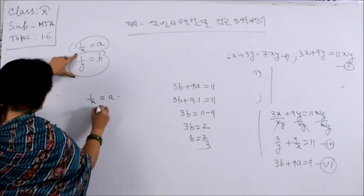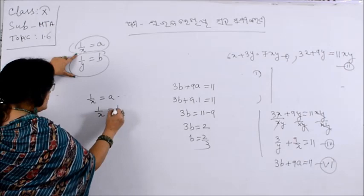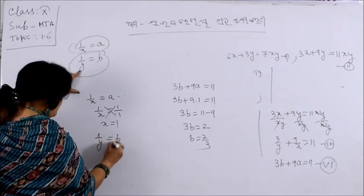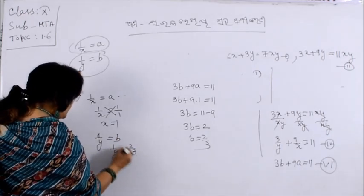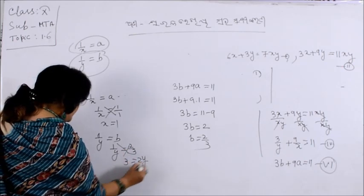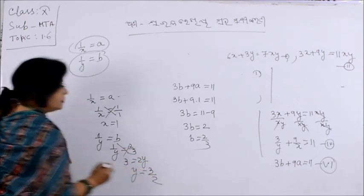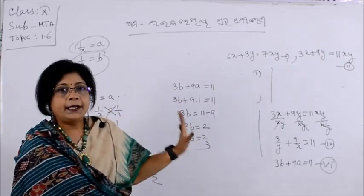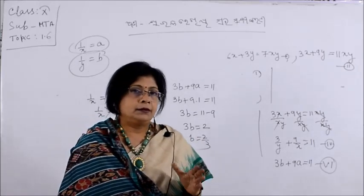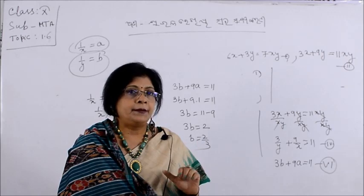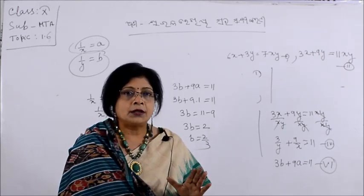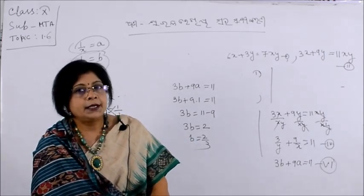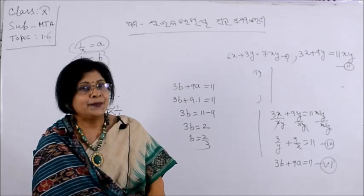1 by x is equal to A, so 1 by x is equal to 1, therefore x is equal to 1. 1 by y is equal to B, 1 by y is equal to 2 by 3, so 3 is equal to 2y, therefore y is equal to 3 by 2. We have found the values of A and B and converted back to find the values of x and y. You can solve this by whichever method seems easier to you — direct or substitution. Practice at home.